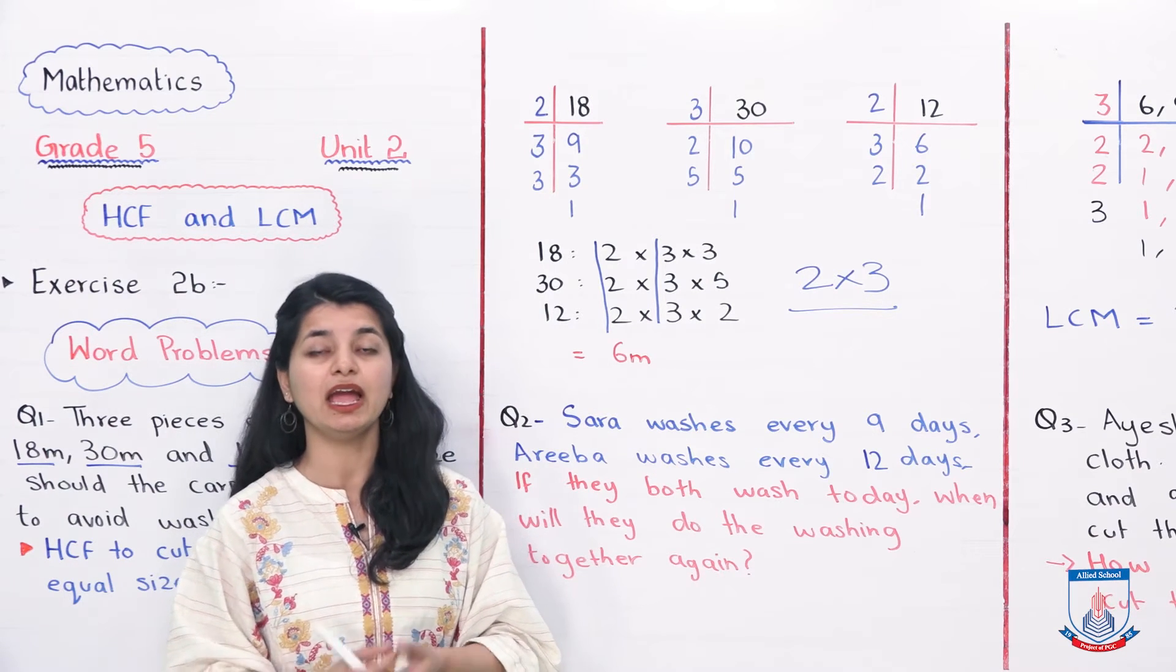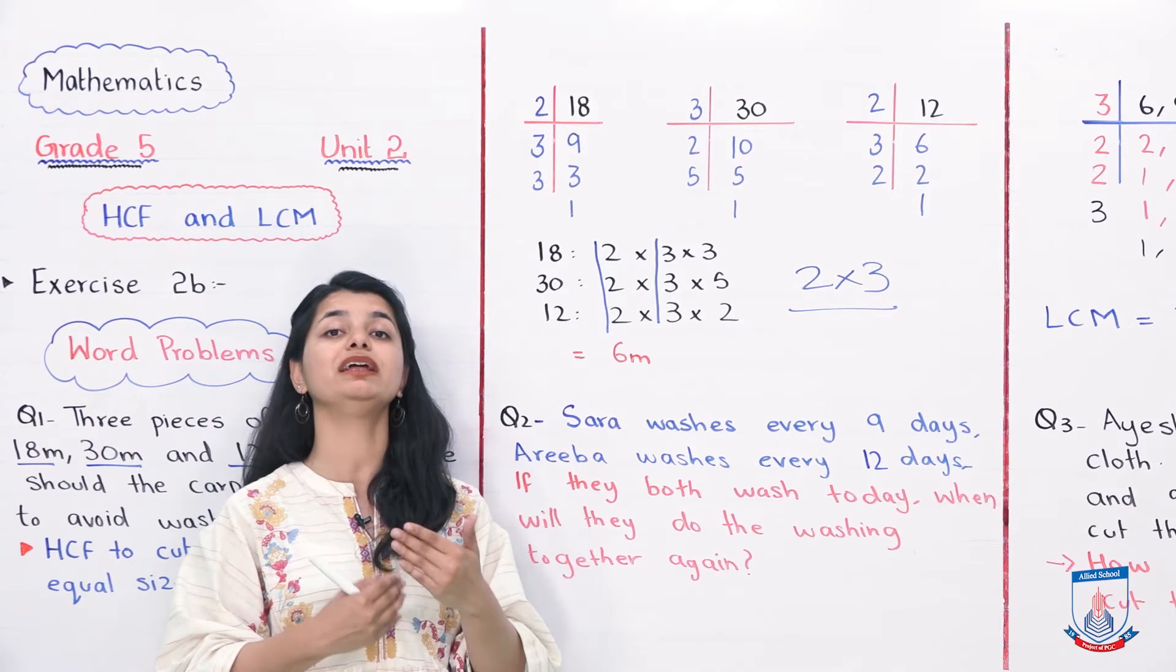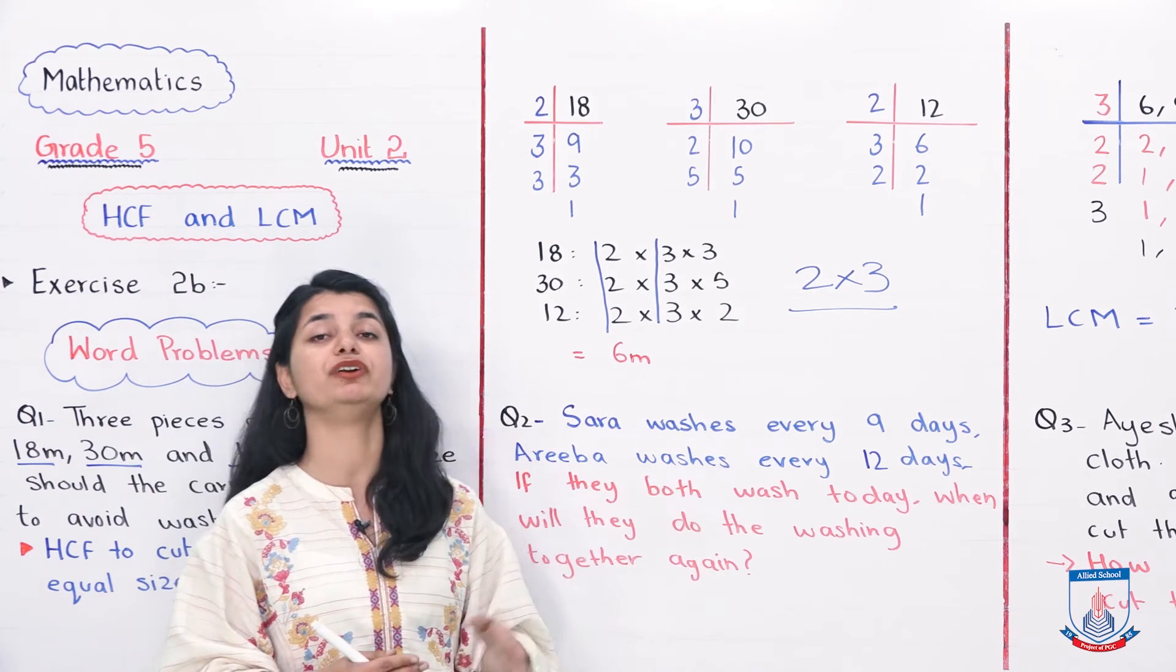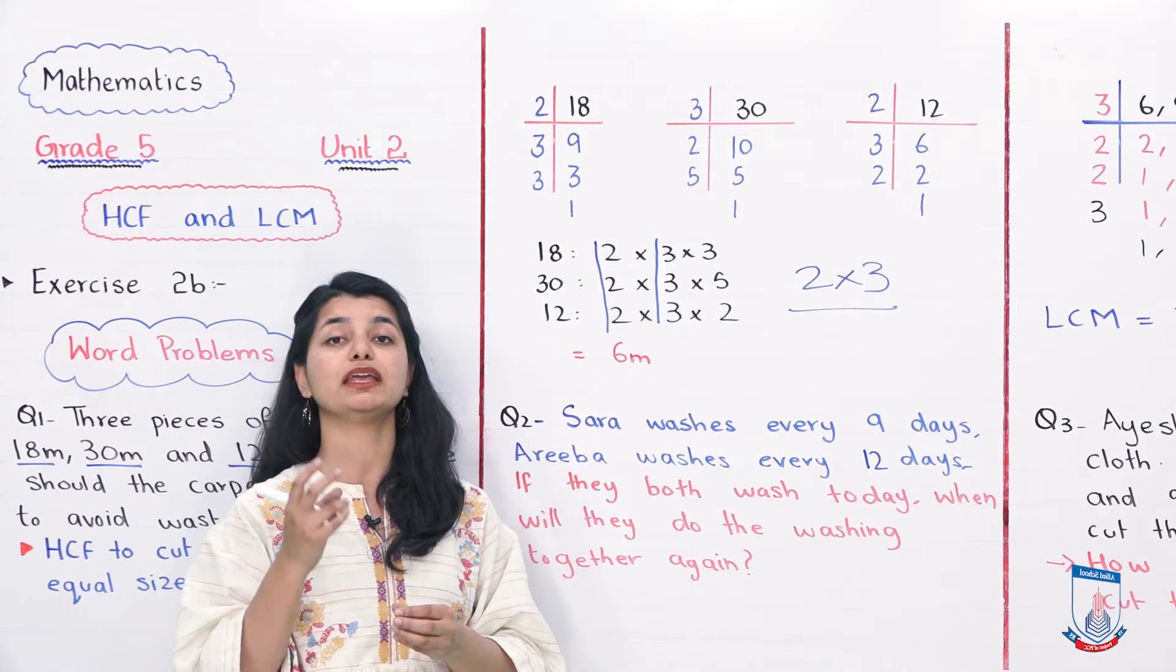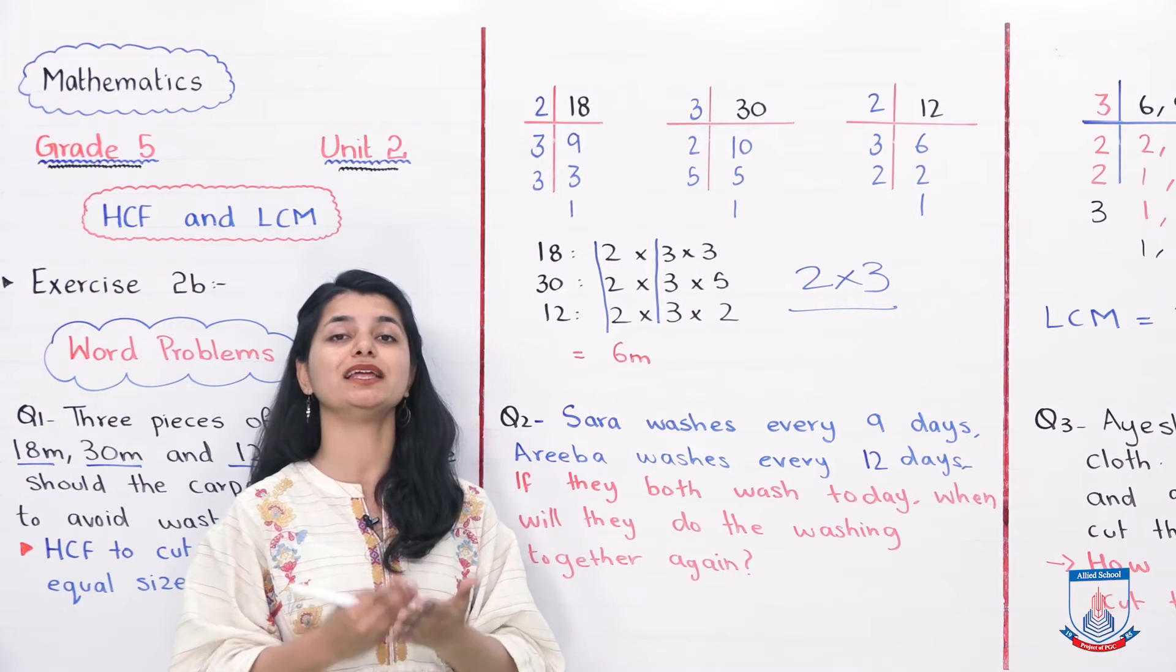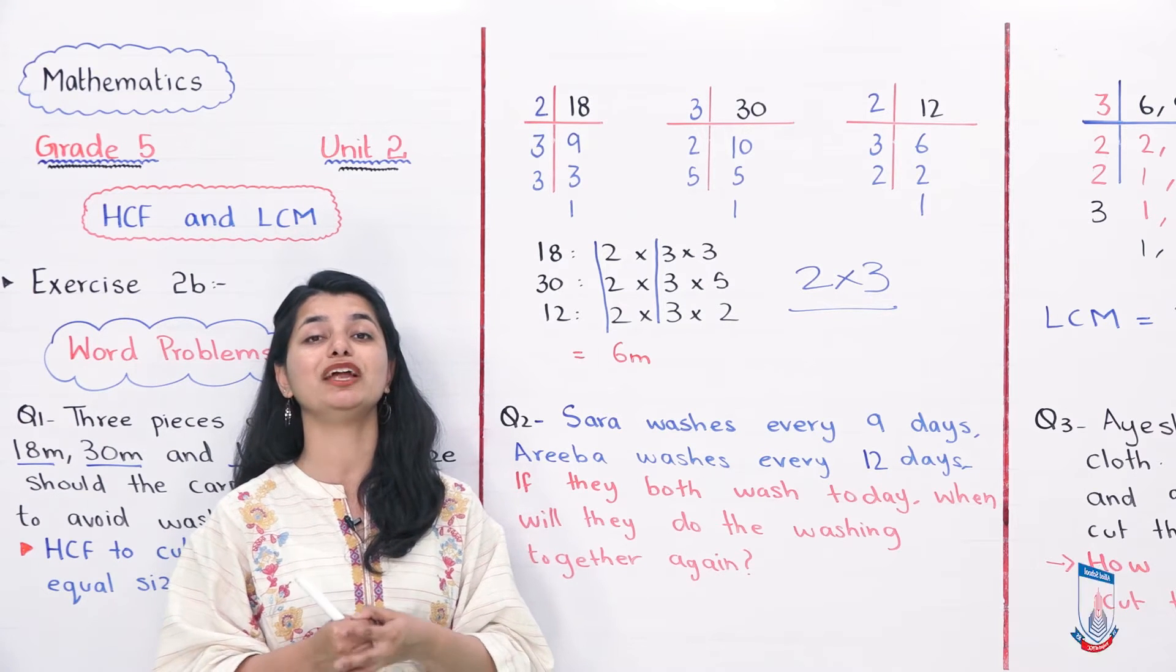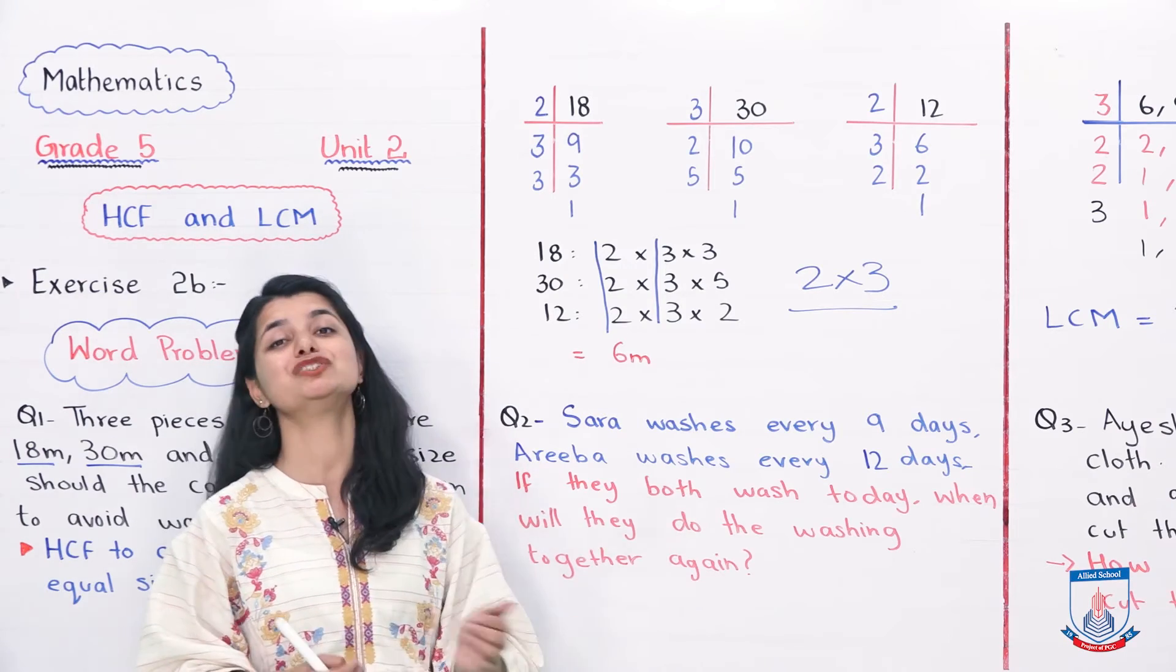If they have done the washing together today, when will they wash together again? Because their time is different. When all three wash together, we have to find which time will come when all three wash together again. We will calculate the lowest common multiple. Let's see how we are going to do that for this question.